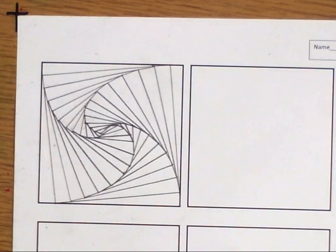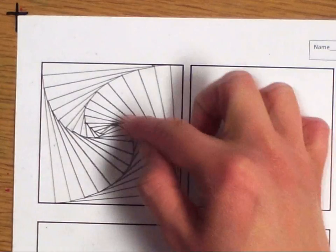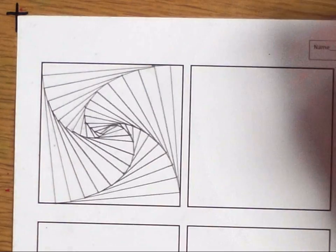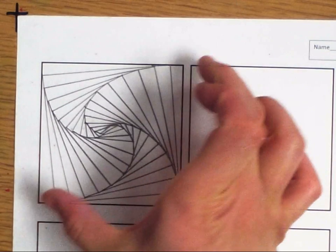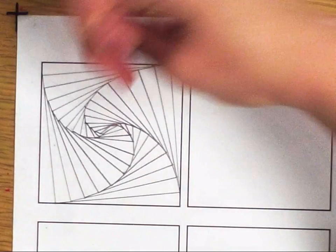And as you can see, it looks like there's these spiral lines going in but I never made a curved line. I used a ruler the entire time. So it looks like this square is slowly getting twisted into the center.